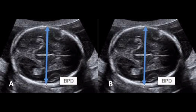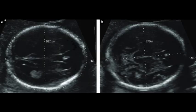It can be measured in a thalamic plane or in a transventricular plane. The latter has the advantage that all three measurements — biparietal diameter, head circumference, and ventricular atrium — can be taken in the same section.